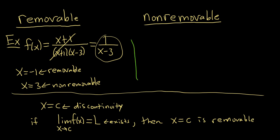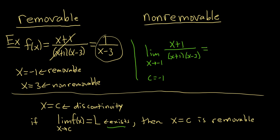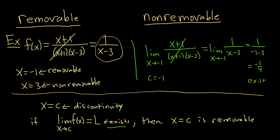In our example, if we take the limit as x approaches negative 1 of (x+1) / ((x+1)(x−3)), our c is negative 1. We can cancel the (x+1) terms, and now we can evaluate the limit. Plugging in negative 1, we get negative 1 minus 3, which gives negative 1 over 4. So the limit exists because it equals a number. Therefore, the discontinuity at x equals negative 1 is removable — which we already knew via intuition because we canceled it.